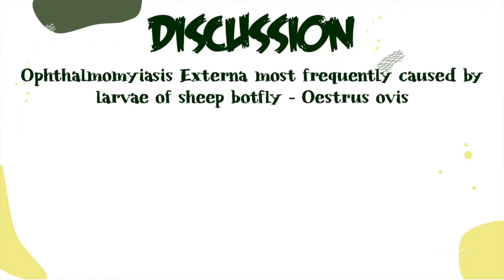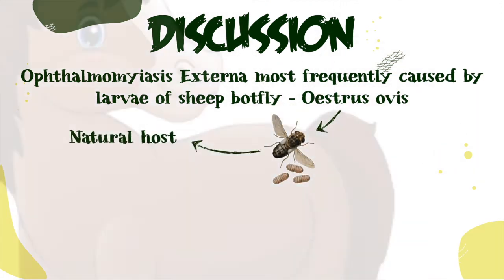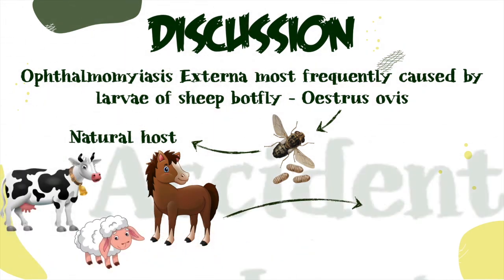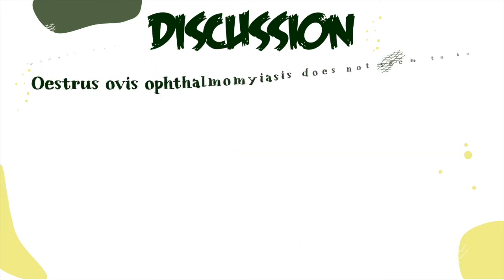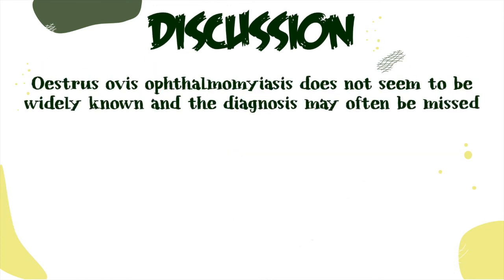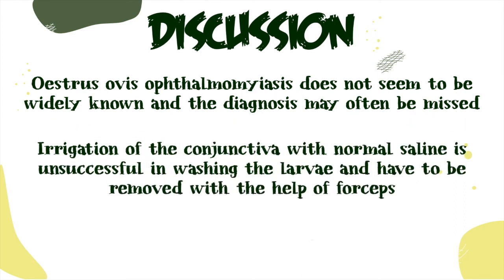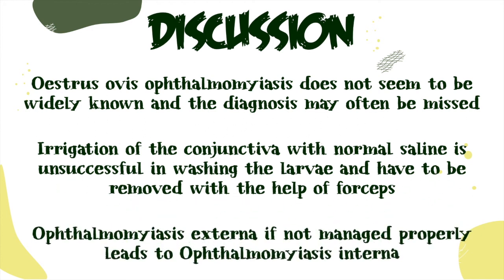Ophthalmomyasis externa is most frequently caused by larvae of sheep botfly Oestrus ovis, whose natural hosts are sheep, horse, and cattle — and humans are just accidental hosts. Oestrus ovis ophthalmomyasis does not seem to be widely known and the diagnosis may often be missed. Irrigation of the conjunctiva with normal saline is unsuccessful in washing the larvae, and they have to be removed with the help of forceps. If not managed properly, ophthalmomyasis externa leads to ophthalmomyasis interna.